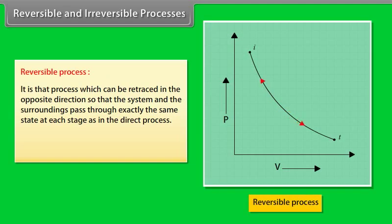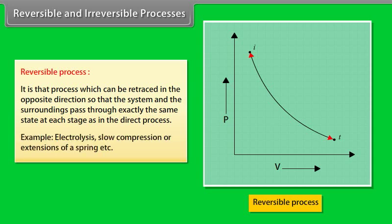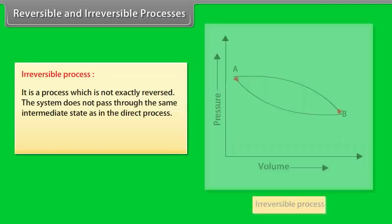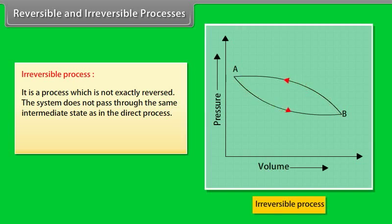Reversible process: a process which can be retraced in the opposite direction so that the system and surroundings pass through exactly the same states at each stage as in the direct process. Electrolysis and slow compression or extension of a spring are examples of reversible processes. Irreversible process: a process which cannot be exactly reversed; the system does not pass through the same intermediate states as in the direct process. All chemical reactions and natural processes are examples of irreversible processes.